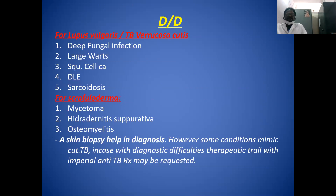The differential diagnosis of cutaneous tuberculosis includes conditions that mimic it, such as deep fungal infections. For lupus vulgaris, the differential includes lupus erythematosus, tuberculosis verrucosa cutis, squamous cell carcinoma, discoid lupus erythematosus, and sarcoidosis. For scrofuloderma, differentials include mycetoma, botryomycosis, sporotrichosis, and osteomyelitis.